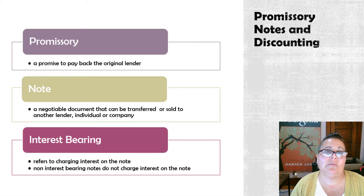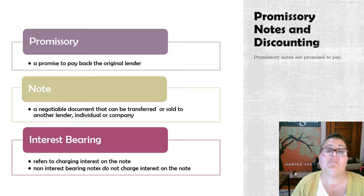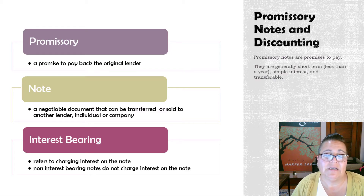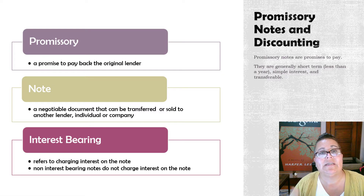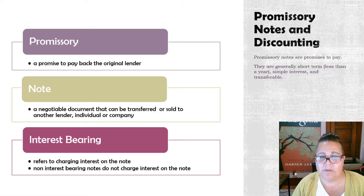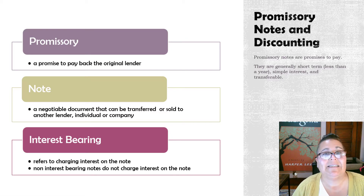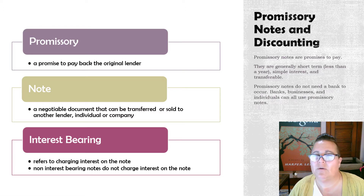A promissory note is basically a promise to pay back the lender — it is a promise to pay, which is part of the reason it's known as a promissory note. The note is negotiable, meaning people can make offers and you can take offers from different persons and banks. Those notes can also be transferred or sold to different lenders, individuals, and companies. The notes are generally short term — less than a year — and usually simple interest, almost always ordinary interest.